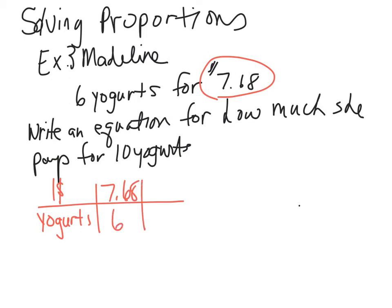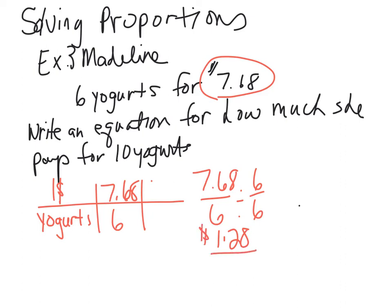If you look at that, you would divide six into $7.68 to find the unit cost. I would take $7.68 and set it up as a fraction, divide by the denominator because I want to know how much each container costs, and I would get $1.28 per container — so per one yogurt.